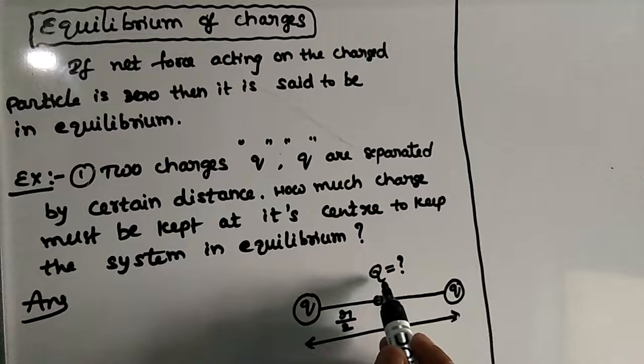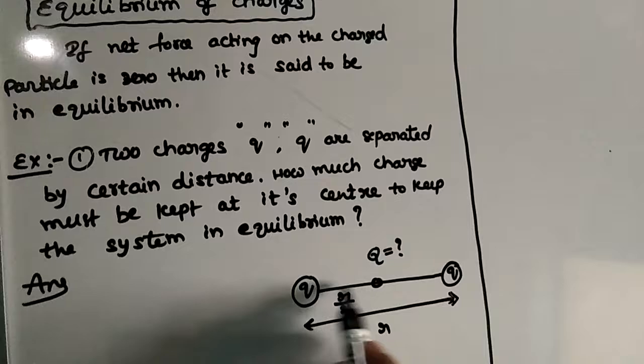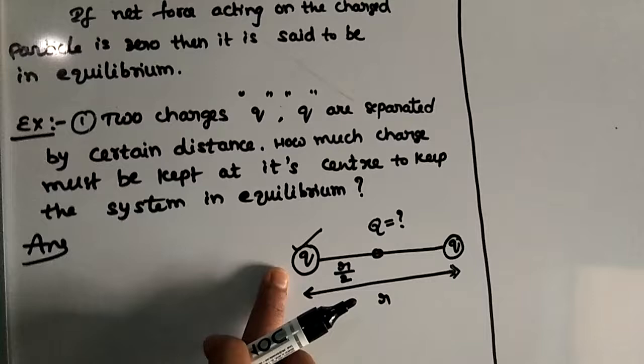So I don't know how much charge I have to keep at the center. I am considering capital Q, which is question mark. I don't know the value of Q. So here the distance I am considering as R. So it is kept at the middle, the distance becomes R by 2. I told you just now, net force acting on any charged particle is zero. So I am considering on this charged particle.